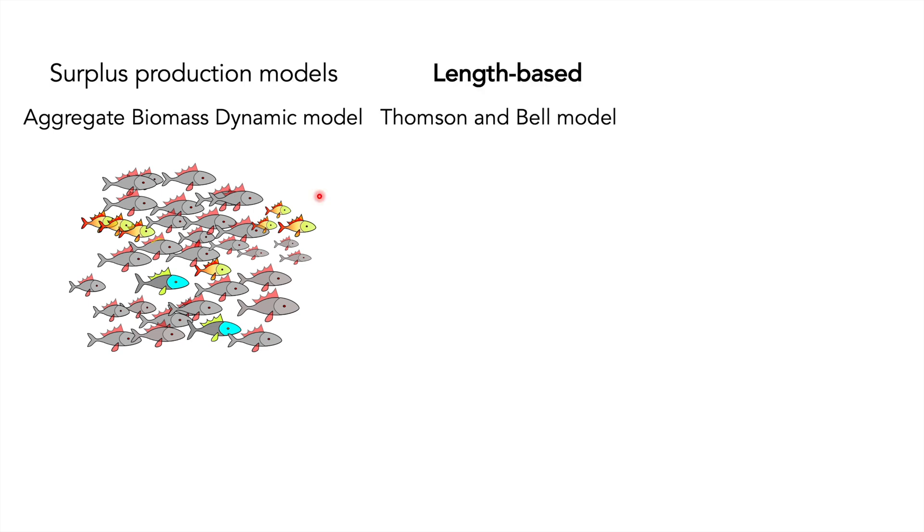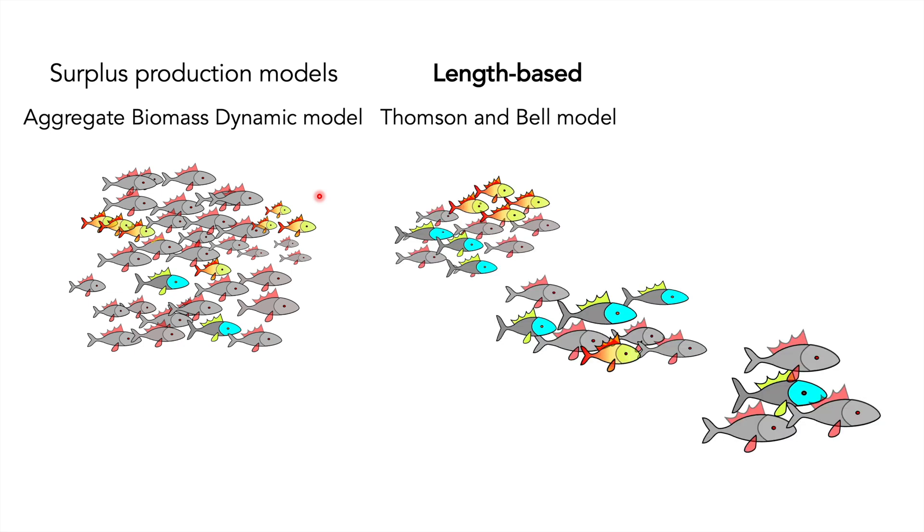Length-based models split the stock into length categories where the Thompson and Bell model are a widely used example of this.